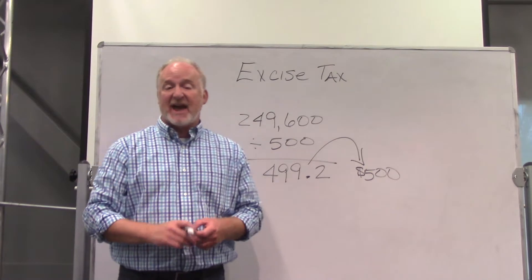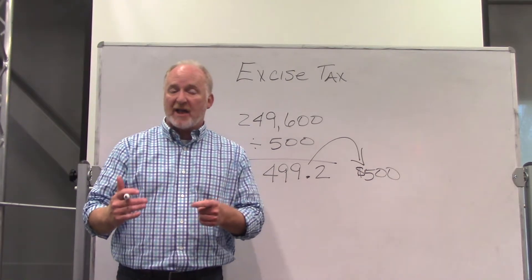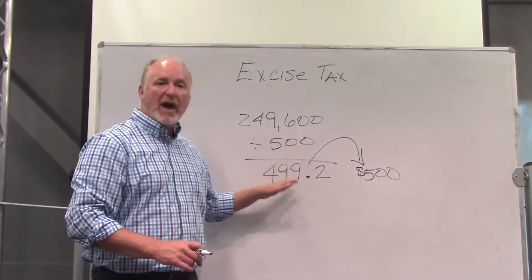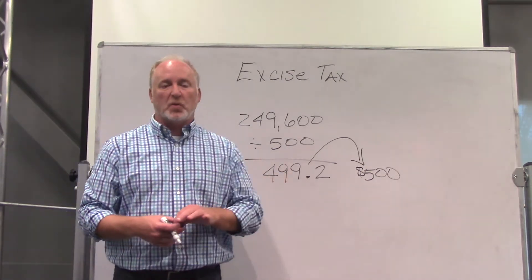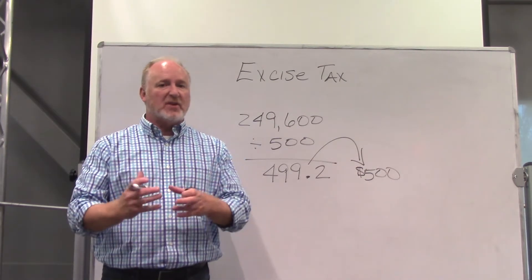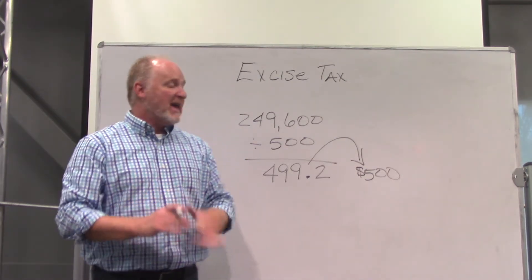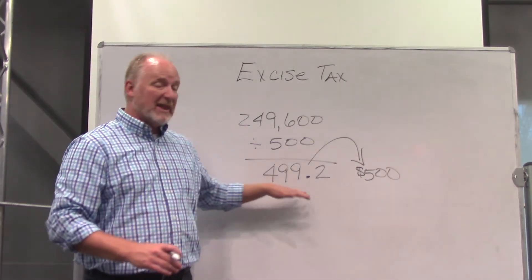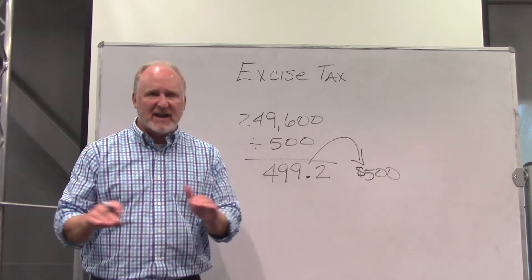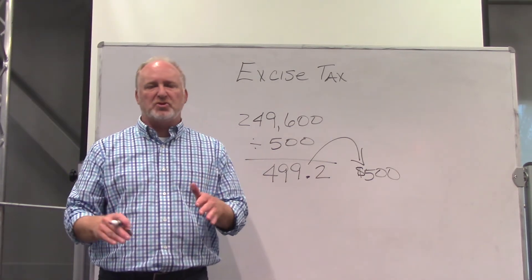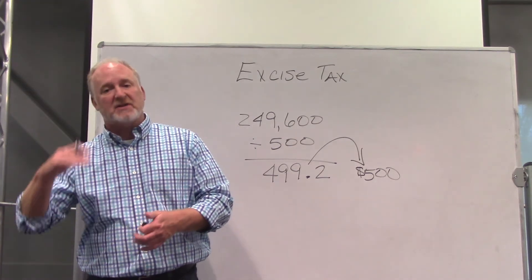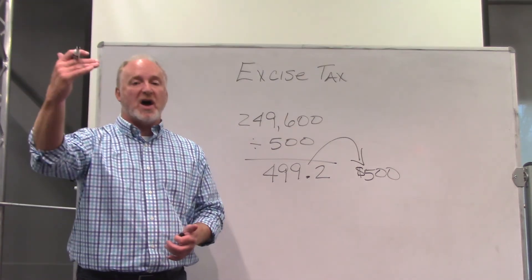So excise tax is $500, debit seller. Don't forget the rule: round up to the next whole dollar. This will be a big deal when we start doing settlement statements. Excise tax will never be a certain amount of dollars and cents — always round up.